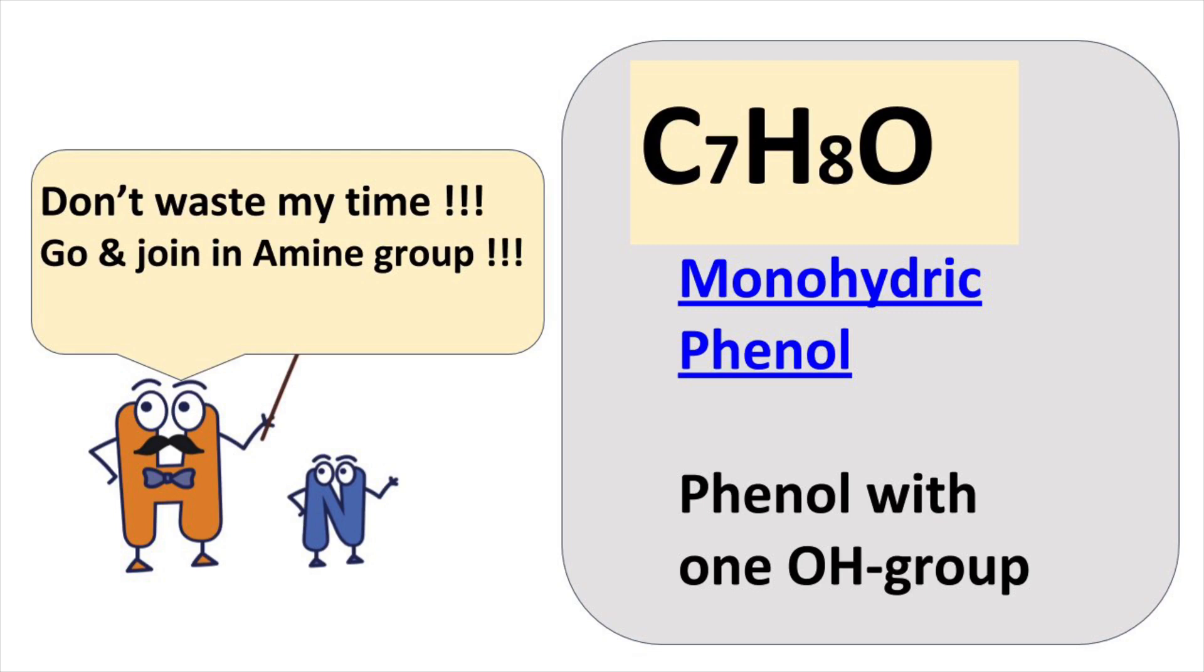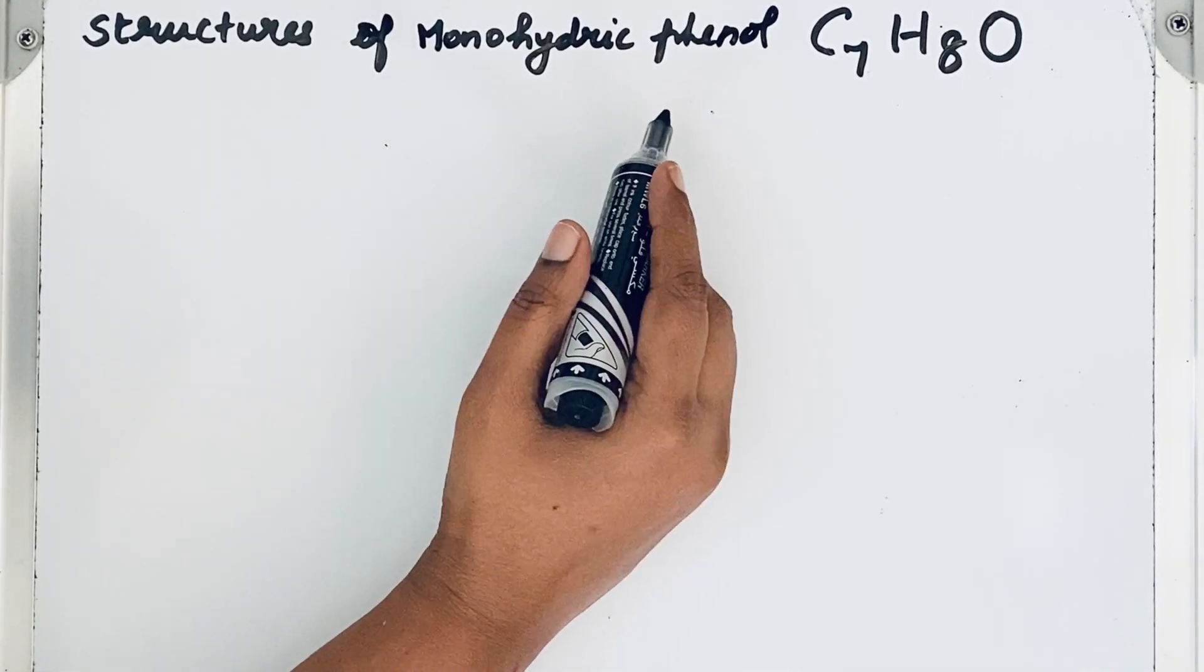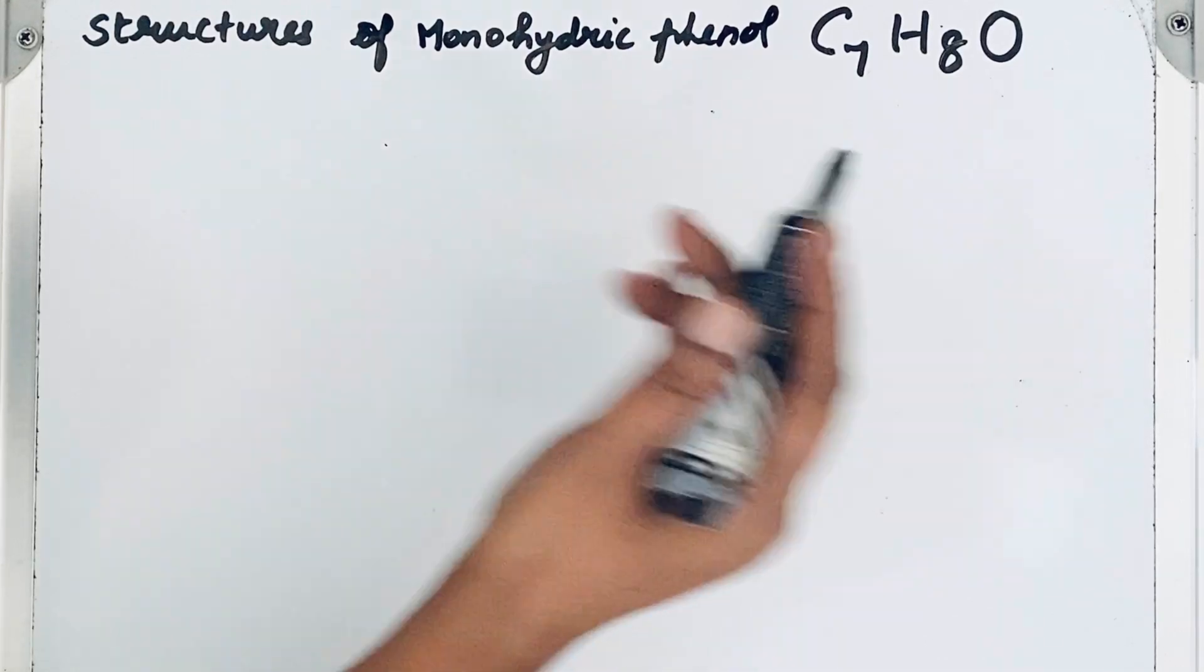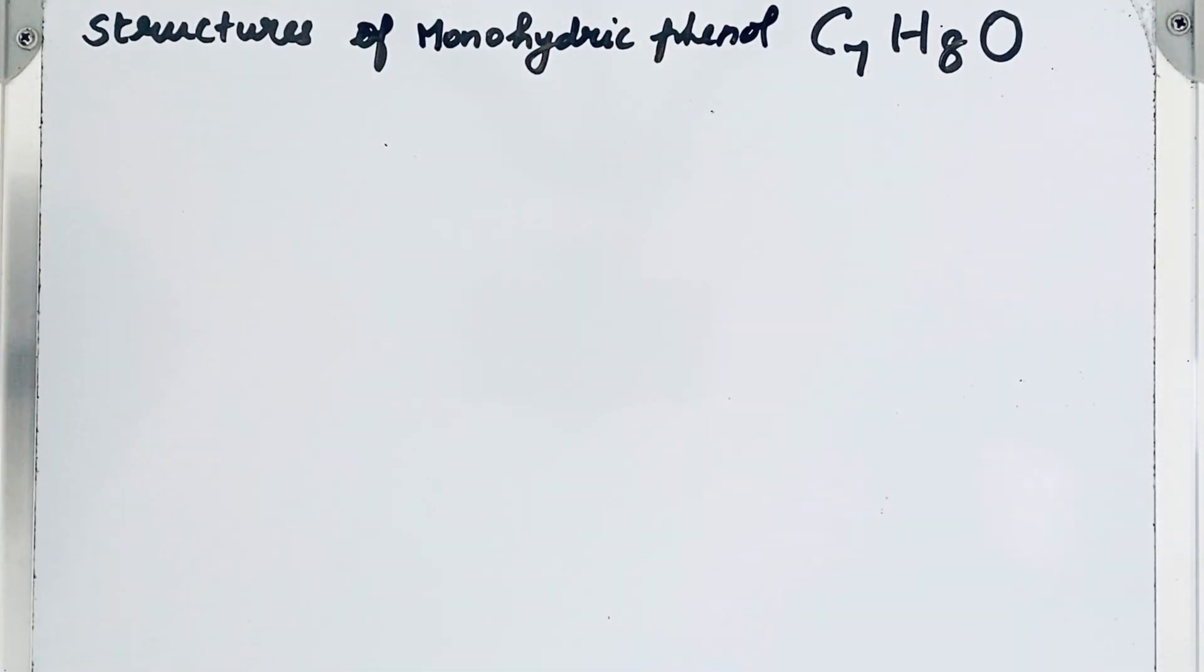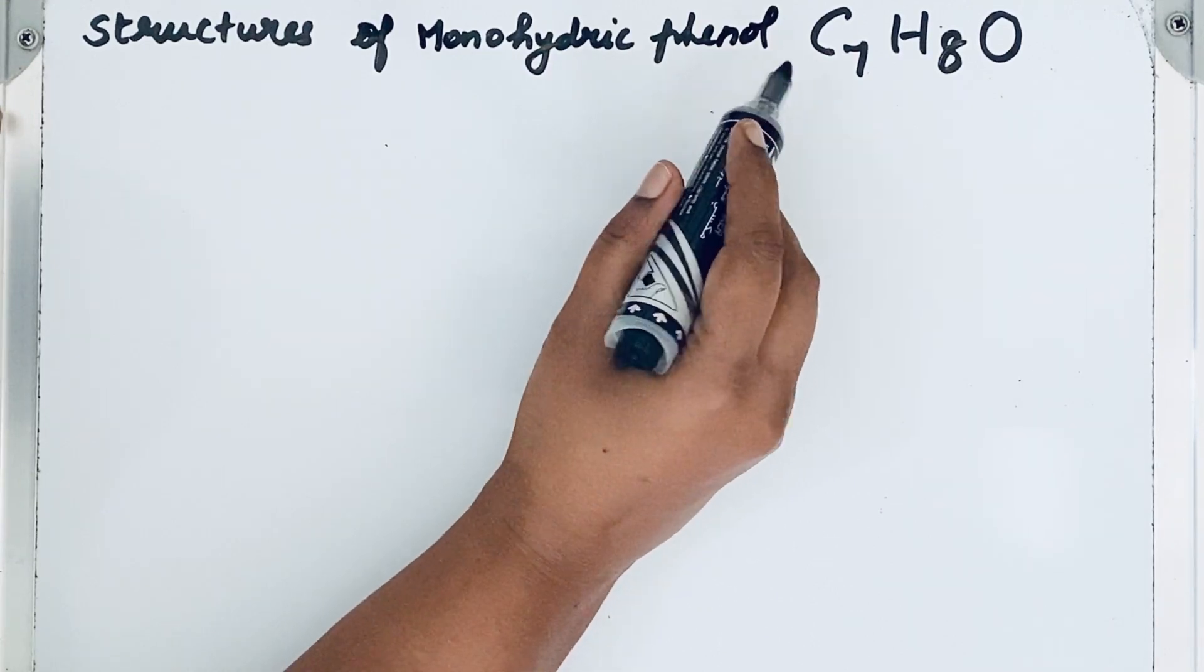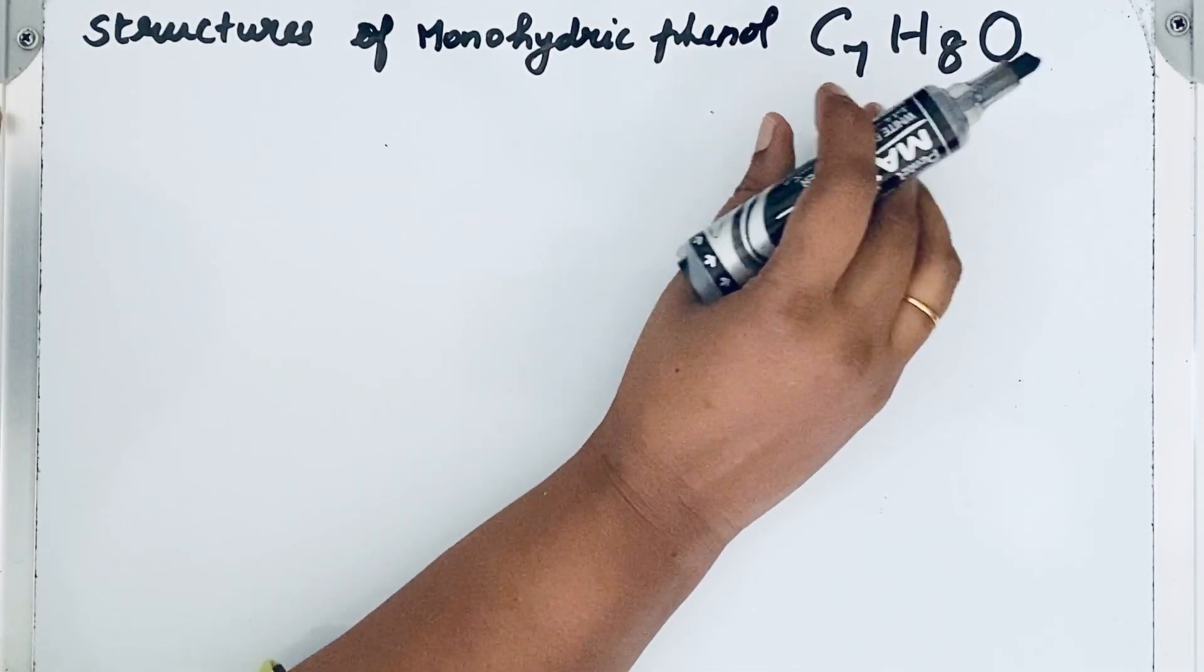Welcome to Aurora Chemistry for everyone. We will try to find structures of monohydric phenol from the given molecular formula C7H8O. From the question itself it is given monohydric phenol, so there is the possibility of phenol.